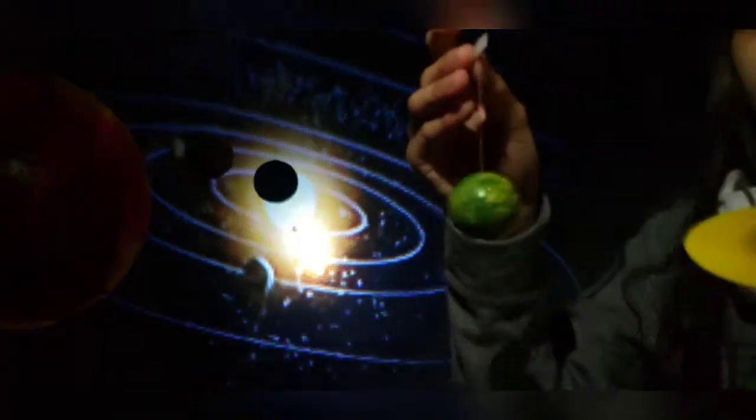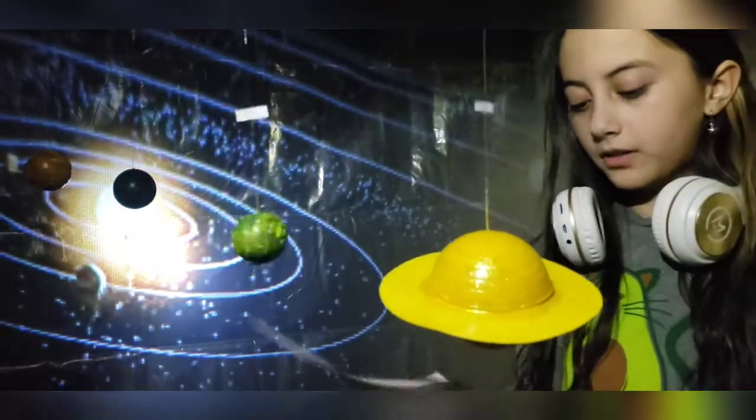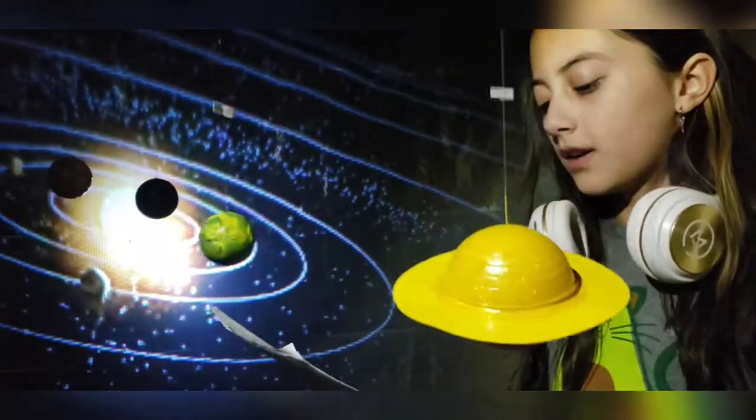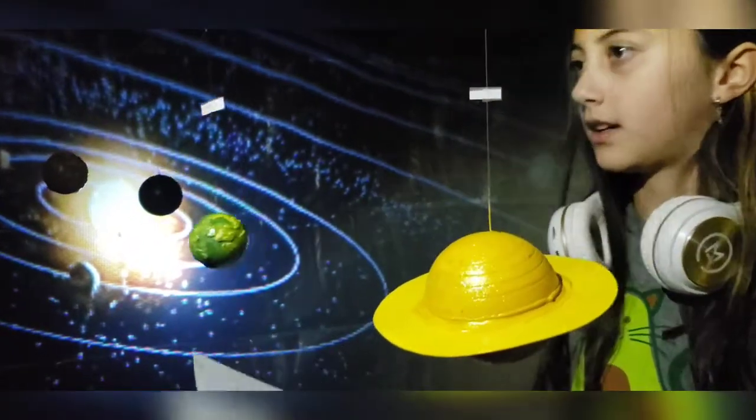And then, this one is Mercury. Mercury is yellow with blue, 5,000 kilometers in diameter.